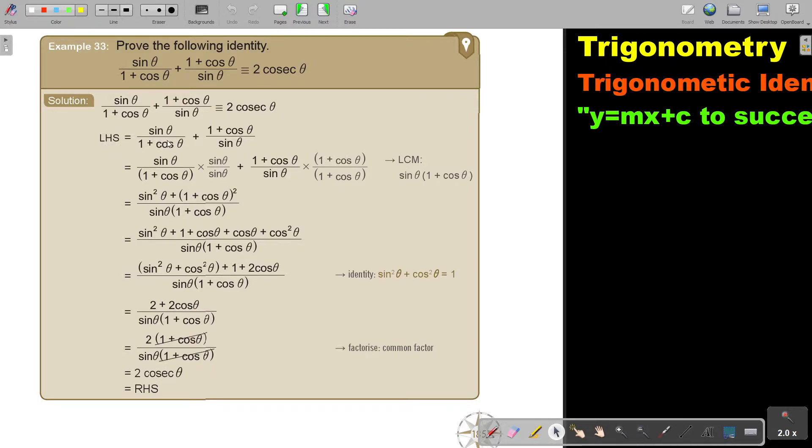Usually you make the two terms one term by finding the lowest common multiple. So the lowest common multiple will be sin theta and 1 plus cos theta. So with this I multiply sin theta, with this I multiply 1 plus cos theta. I do that. I get sin square theta. This is the difference. No, it's not the difference between two squares. It's just 1 plus cos square theta and there's two of them.